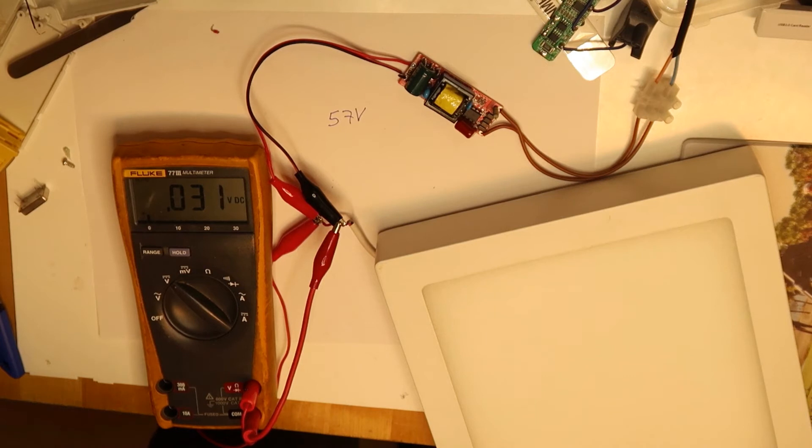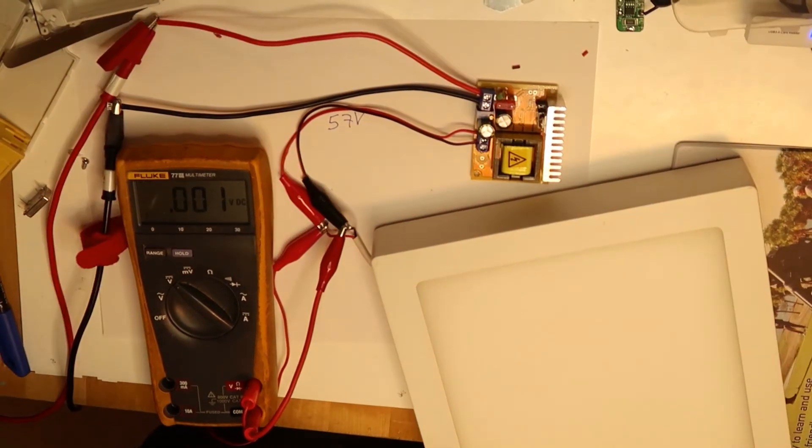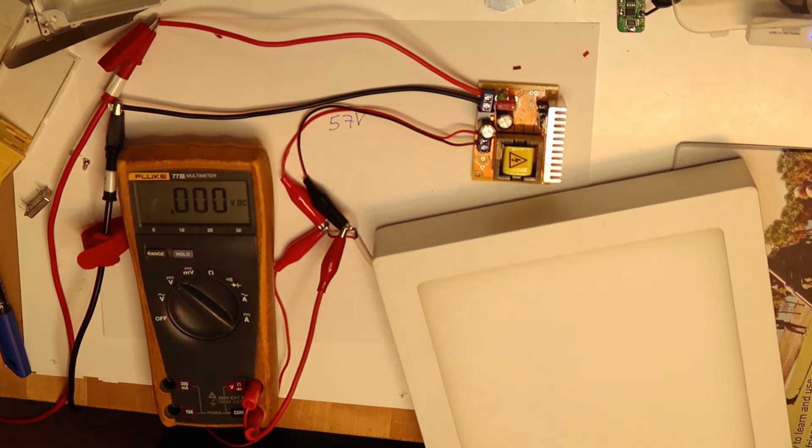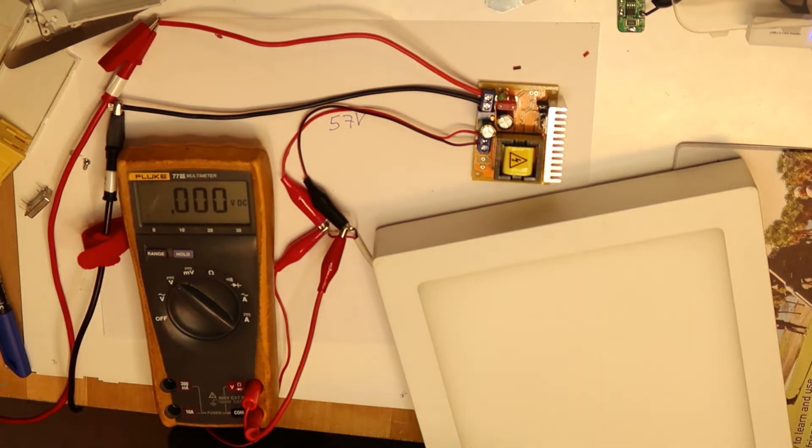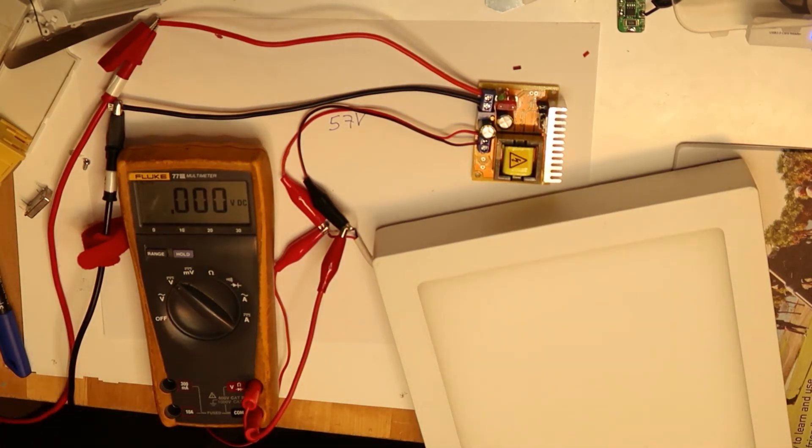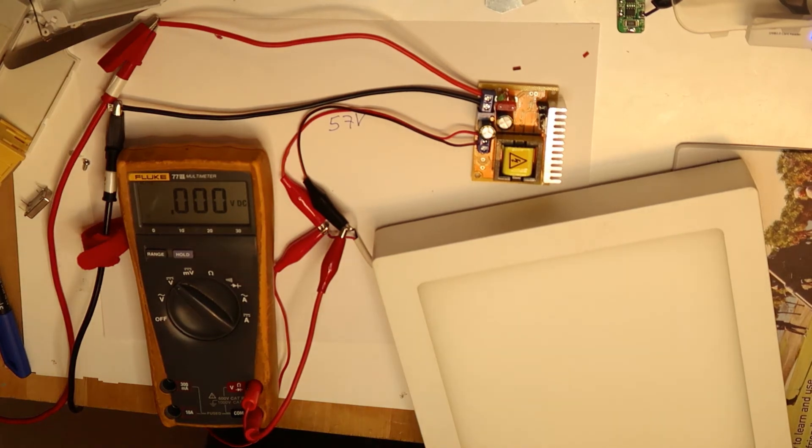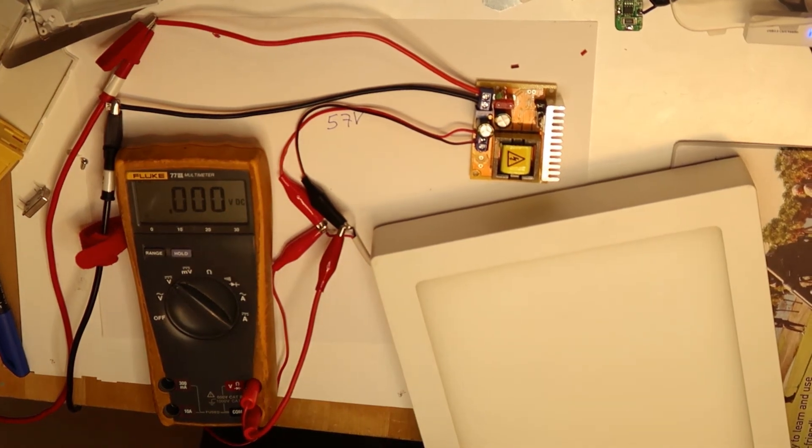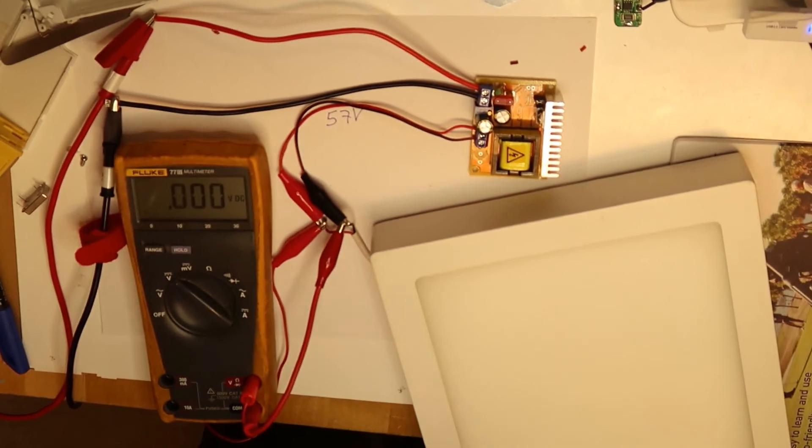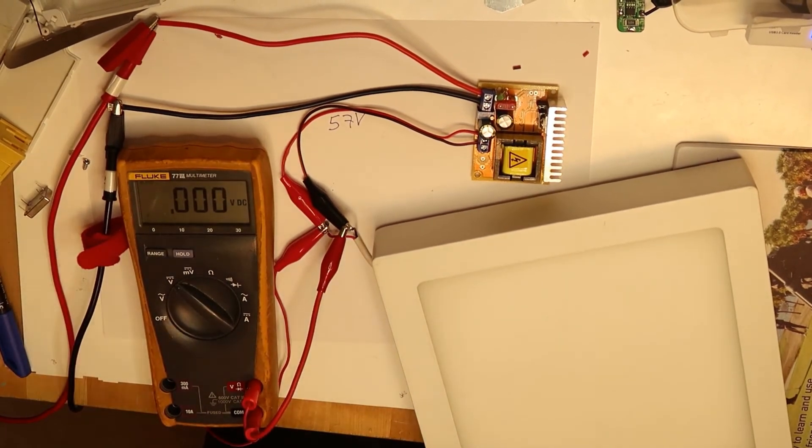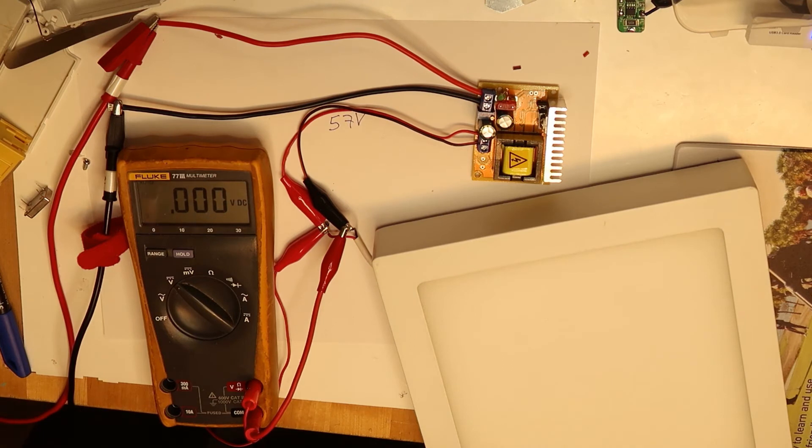So now I've connected the same LED lamp to this DC-to-DC converter. I will apply 12 volts to the input and adjust the voltage out to 57 volts. This is what we've seen. So 12 volts, 2 amps.